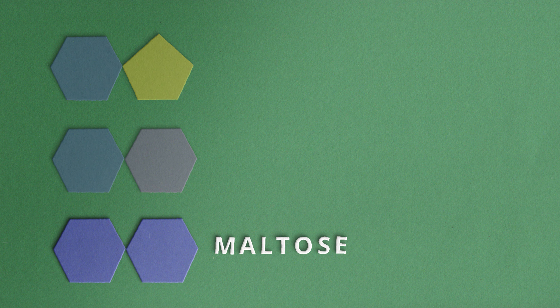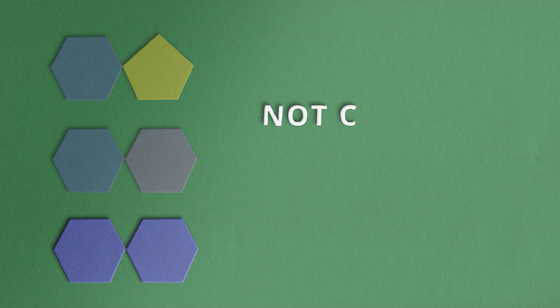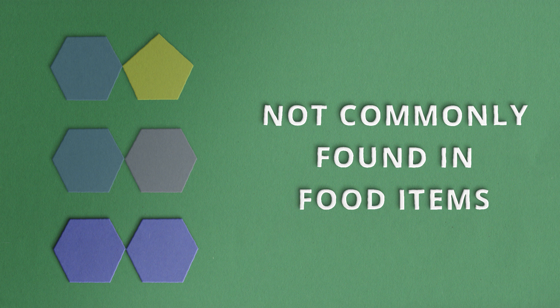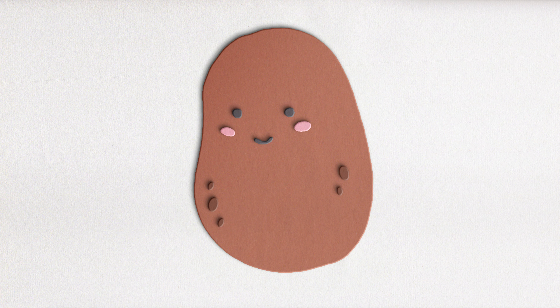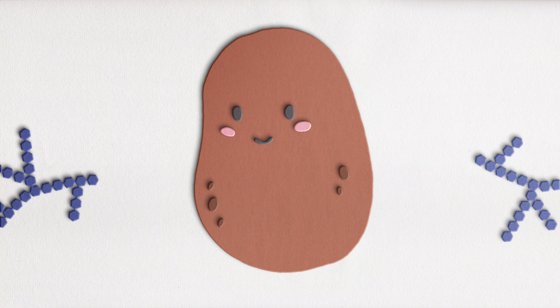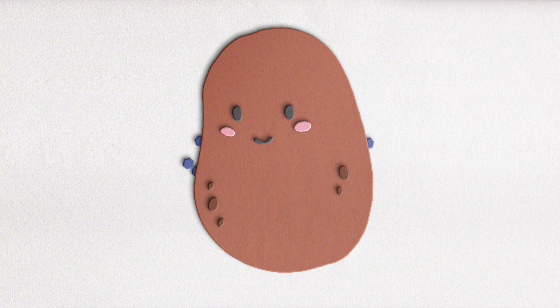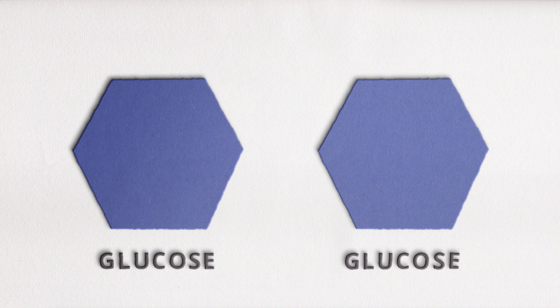Finally, we have maltose — aka malt sugar — which is not commonly found in food items. Instead, it is created during the digestion or breakdown of starch. Starch is that big carbohydrate molecule found in potatoes. Maltose is made up of two molecules of glucose linked together.